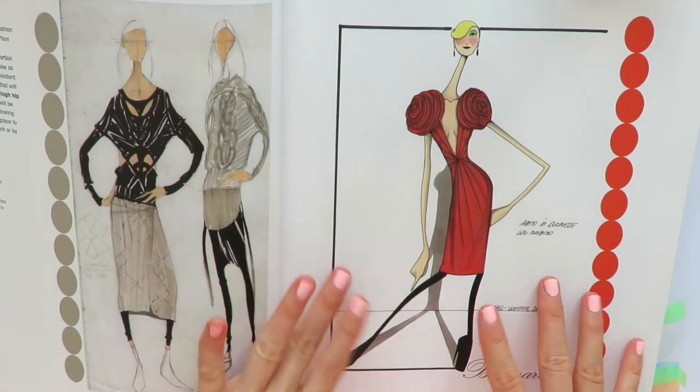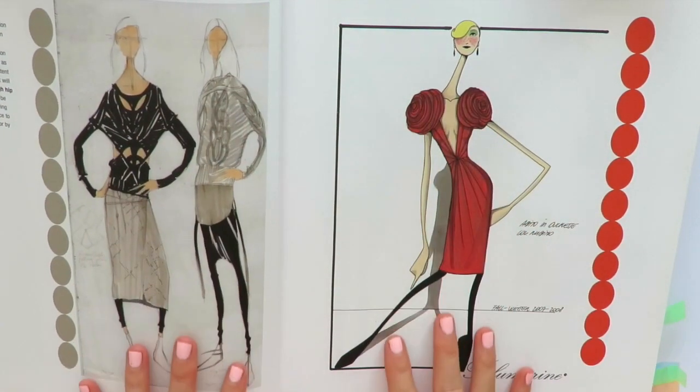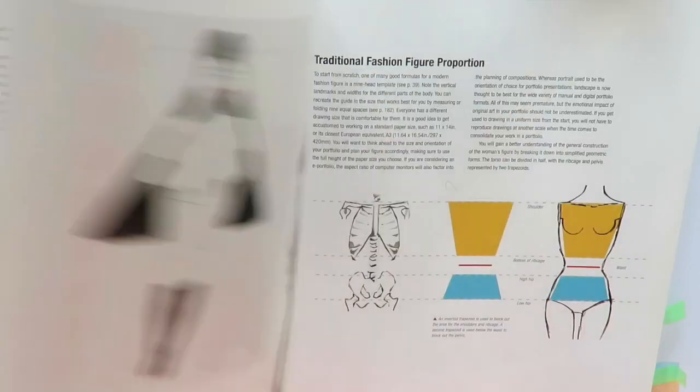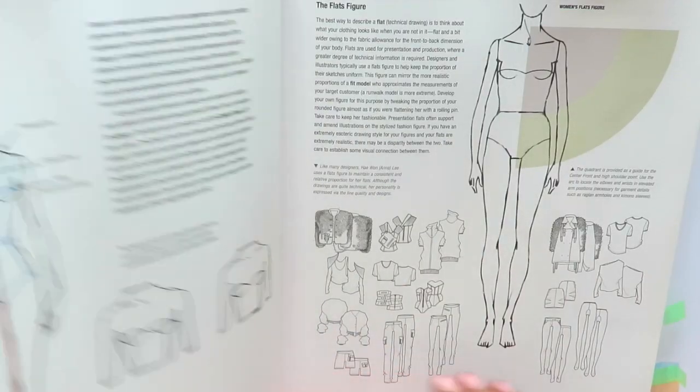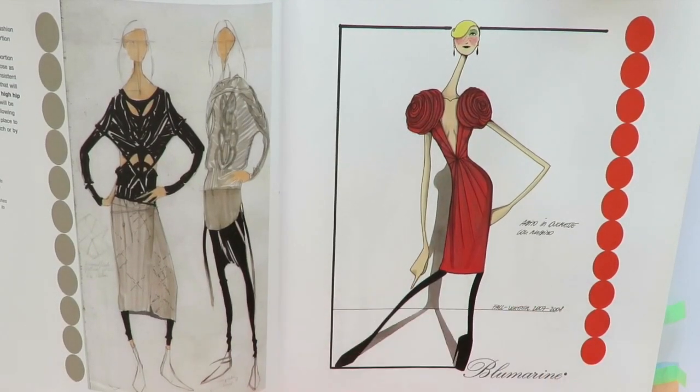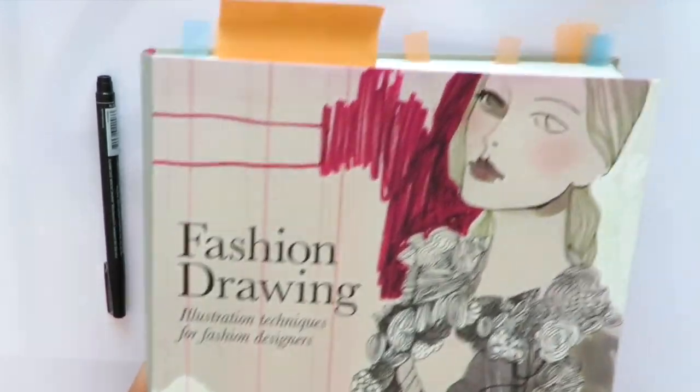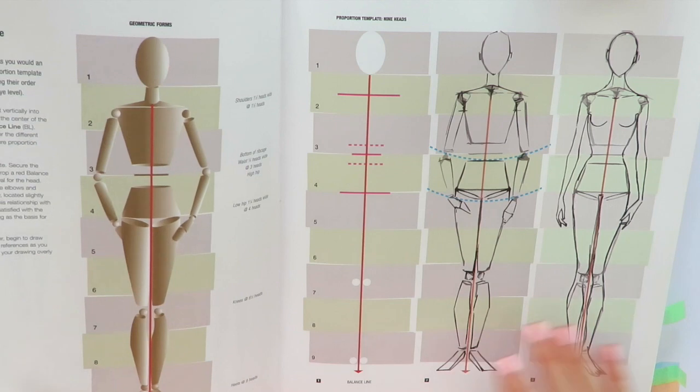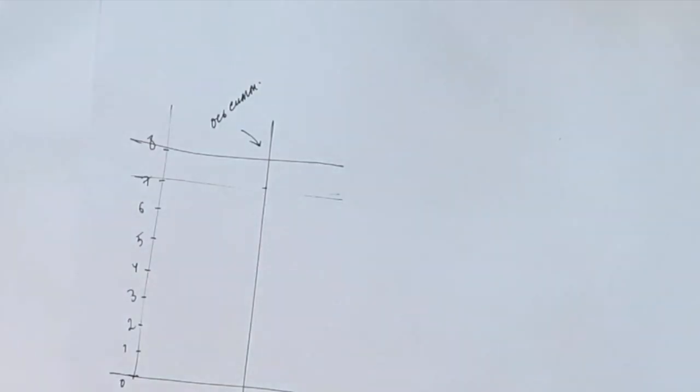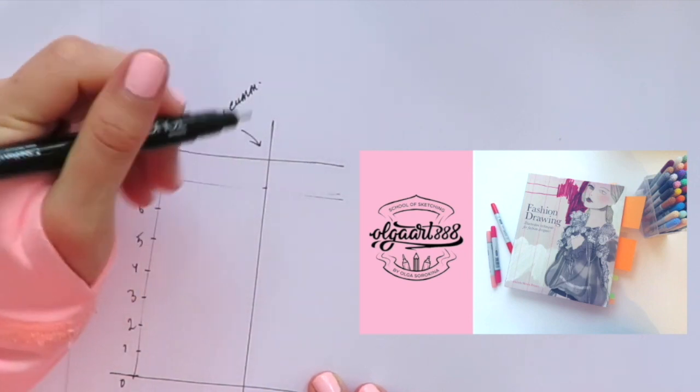In Parsons university they teach you to draw even 12 or 13 heads. Fashion drawing is all about transformation of the human body, elongating proportions in order to make the garments and clothing look better, and to make fashion looks more aesthetically pleasing. In this book they teach nine heads technique. You can find this book review on my YouTube channel.